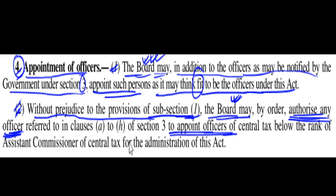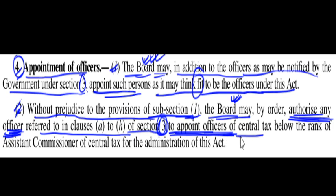The Board may authorize any officer referred to in clauses (a) to (h) of Section 3 — that is, officers appointed under Section 3 — to appoint officers of central tax below the rank of Assistant Commissioner of Central Tax, for the administration of this Act.